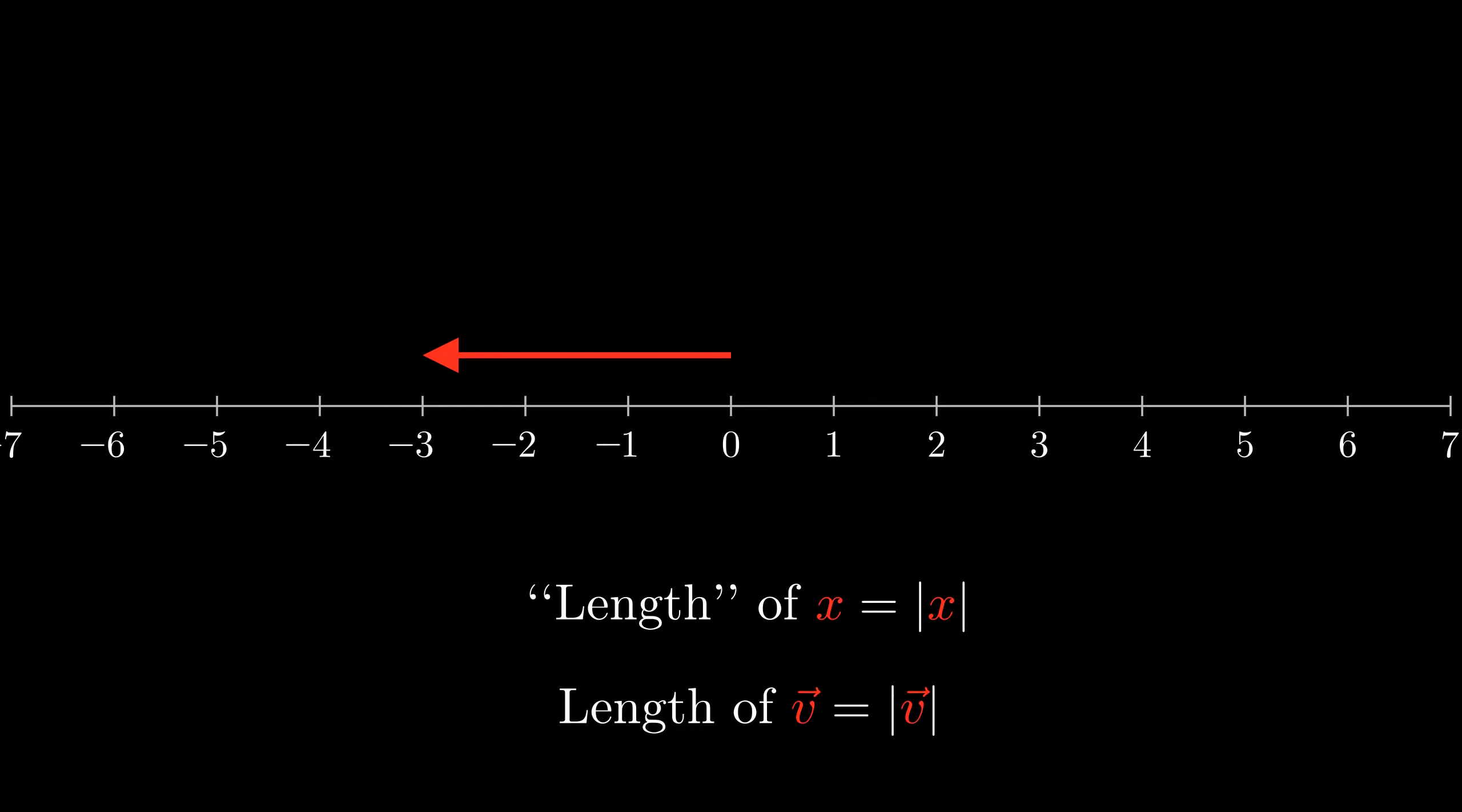This method of associating vectors on a line with numbers is very useful when trying to figure out the properties of vectors. We will be using it several times in the future. Just so you know, some people like to differentiate between the length of a vector and the absolute value of a number, so they write the length of a vector with two vertical bars on each side instead of just one. However, in geometric algebra, we will figure out that they really are the same thing, so I will use the notation that looks like the absolute value.